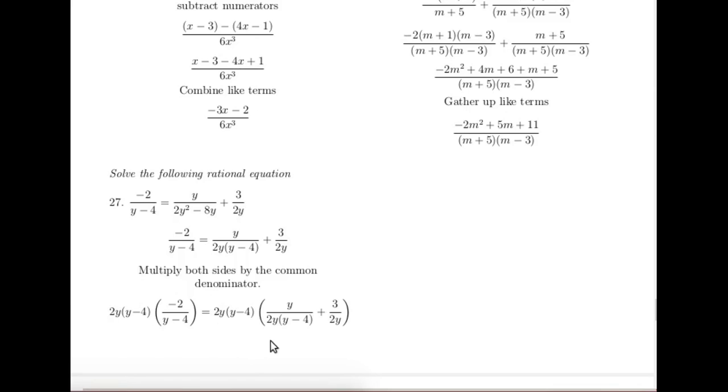Once we clean this up all of the denominators will go away. You see this x minus 4 will cancel this x minus 4, this 2x times x minus 4 will cancel this whole denominator, and when we distribute this through this 2x will cancel this 2x.